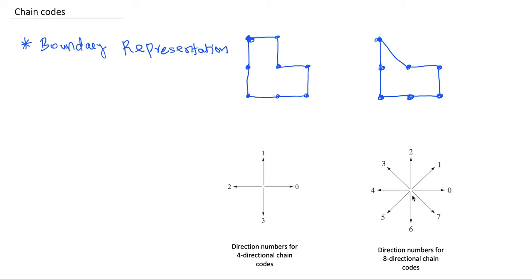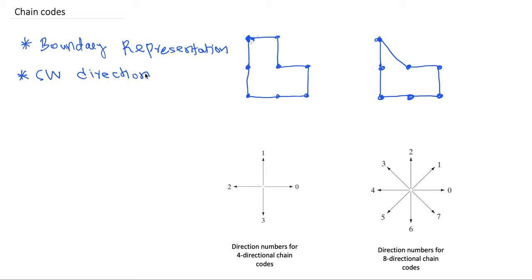The same kind of representation applies for an eight-directional chain code also. Now we will look at how the chain codes can be created using these directional numbers. To begin with, we have to choose an initial point to start the coding from. By convention, we will be choosing the top-leftmost point, then traverse in the clockwise direction. We take the first straight-line segment from the starting point, which is going to the right side, so we code that segment with number zero.